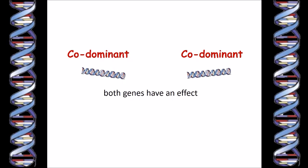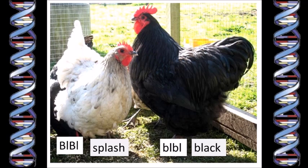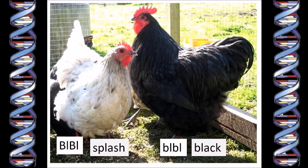Take for example the gene for black feathers, represented by the letters little bl. Its alternative gene is represented as capital BL. If a chicken has two genes for black feathers, its feathers are black. If a chicken has two of the alternate genes, its feathers are mostly white — although there might be some black or grey speckles amongst the white feathers — and the colour is really called splash.